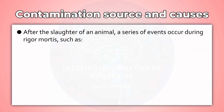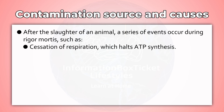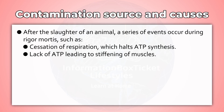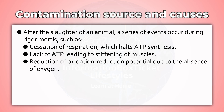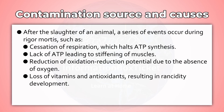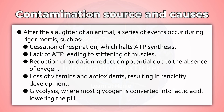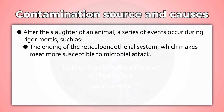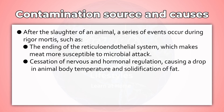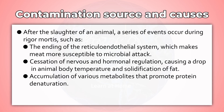After the slaughter of an animal, a series of events occur during rigor mortis, such as: cessation of respiration, which halts ATP synthesis; lack of ATP, leading to stiffening of muscles; reduction of oxidation-reduction potential due to the absence of oxygen; loss of vitamins and antioxidants, resulting in rancidity development; glycolysis, where most glycogen is converted into lactic acid, lowering the pH; the ending of the reticuloendothelial system, which makes meat more susceptible to microbial attack; cessation of nervous and hormonal regulation, causing a drop in animal body temperature; solidification of fat; and accumulation of various metabolites that promote protein denaturation.